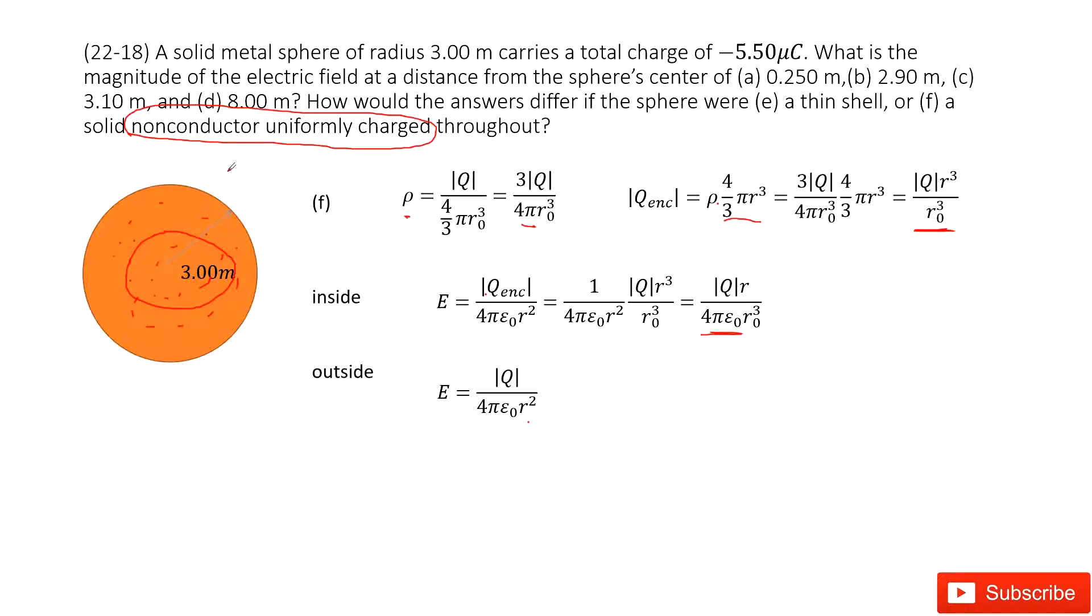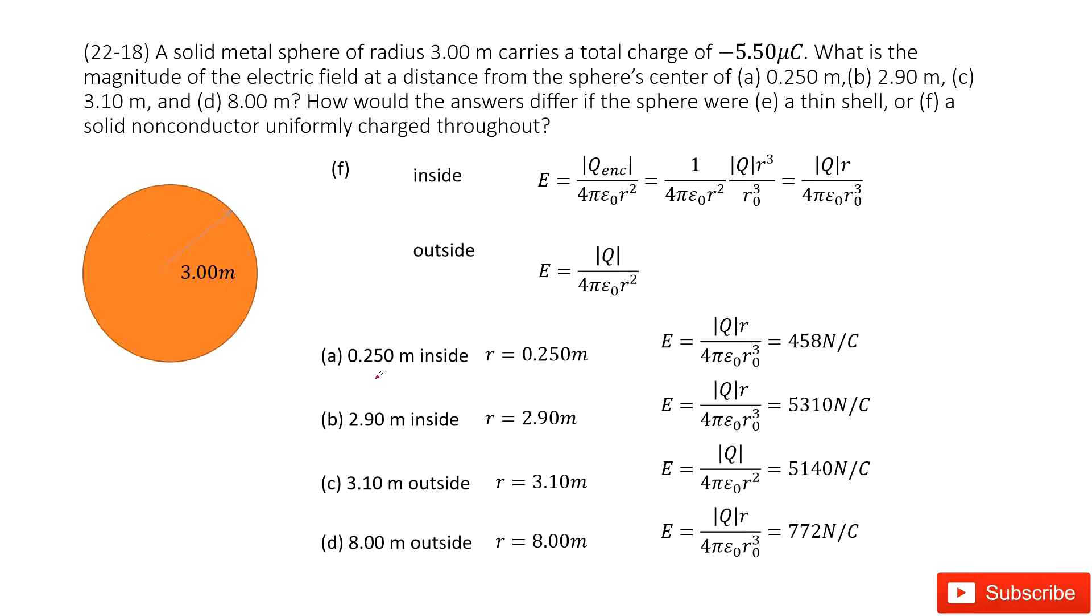For the outside, for the circle outside, the net charge enclosed is just Q. You don't need to do anything, just Q. In different regions, like inside regions, when r changes from 0.25 to 2.1 meters, we use the first equation. And for the distance 3.1 meters to 8 meters, we know it is outside of this object. We use this function to get the answer. Thank you.